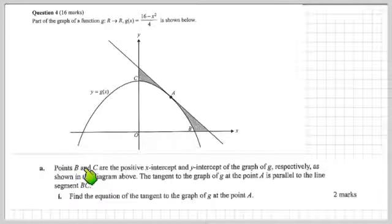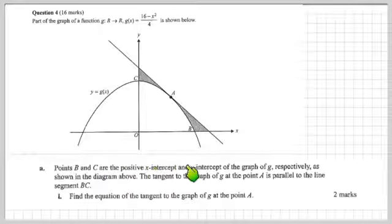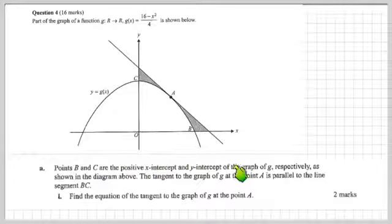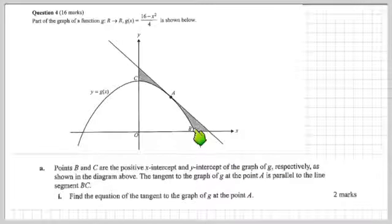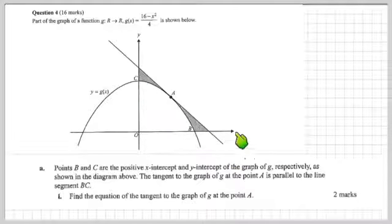Points B and C are the positive x-intercept and y-intercept of the graph g, respectively. Let's find them — B and C.